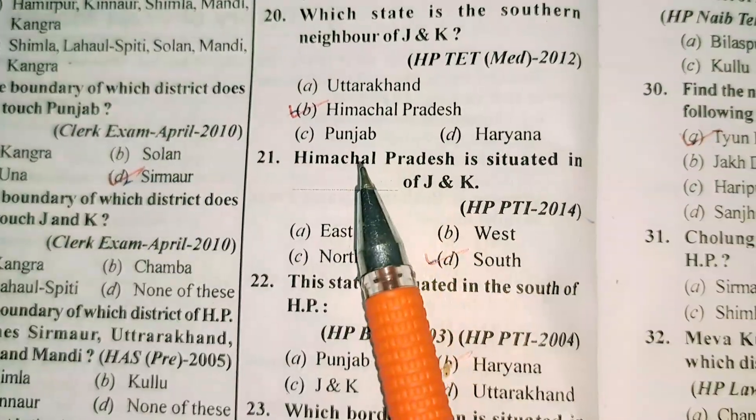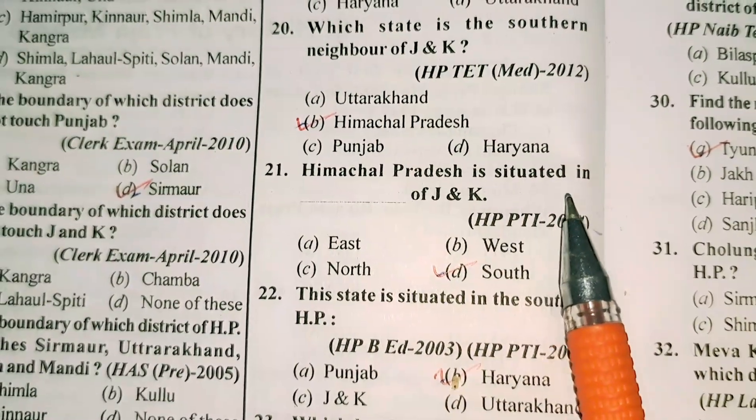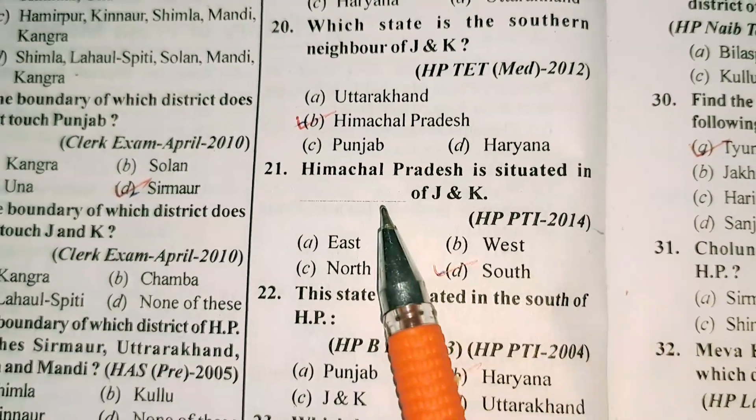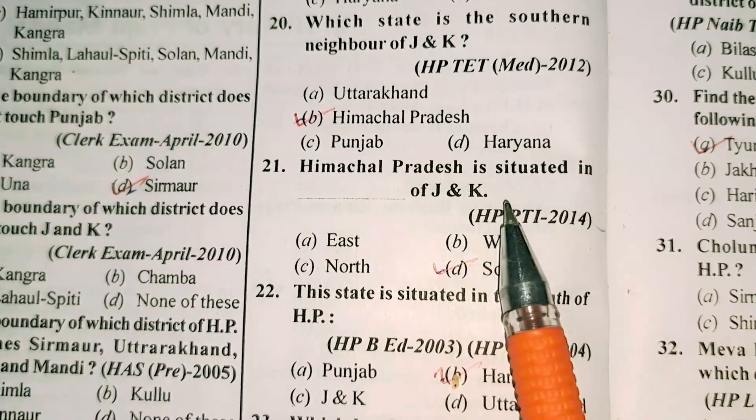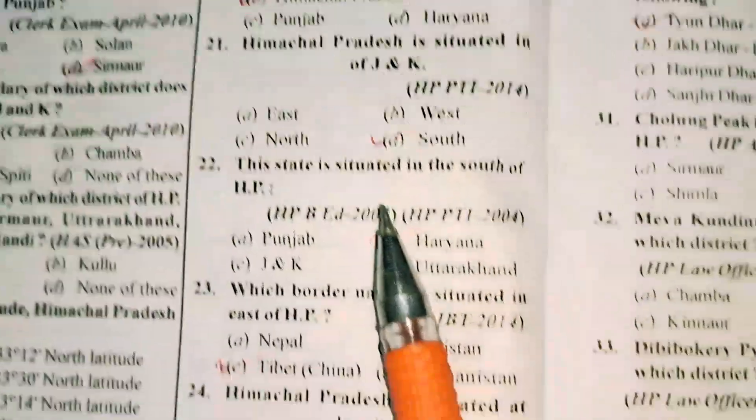Question number 21 is: Himachal Pradesh is situated in which direction of Jammu and Kashmir? Option D is correct — South.